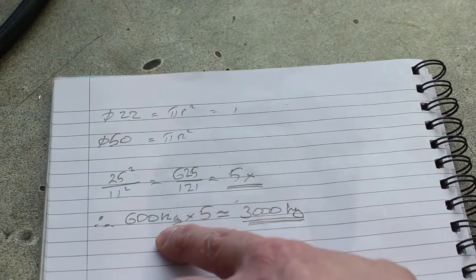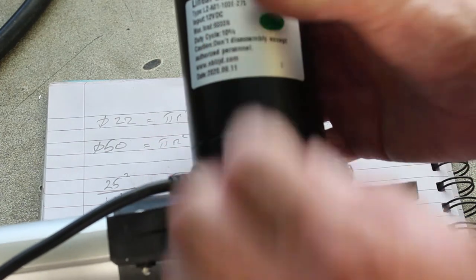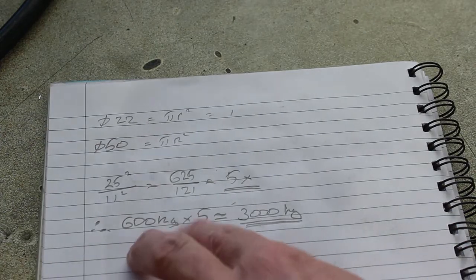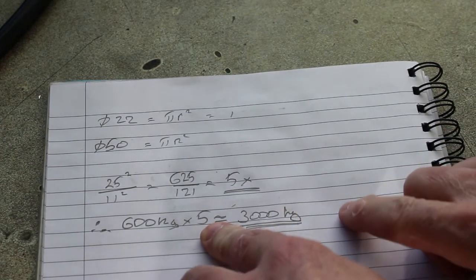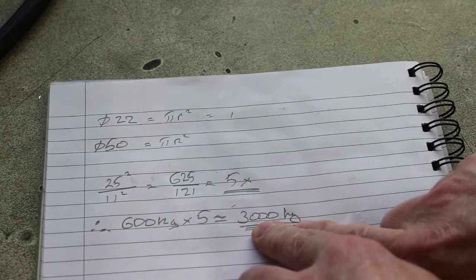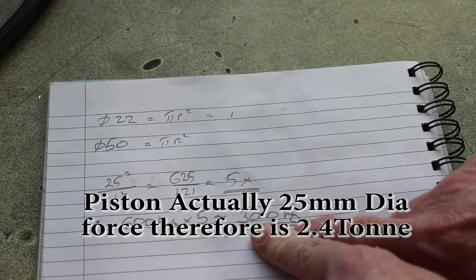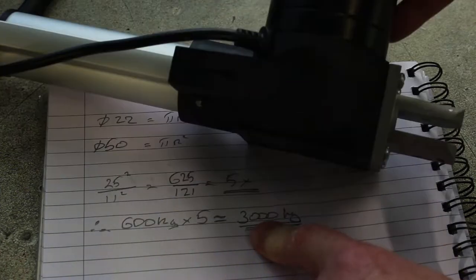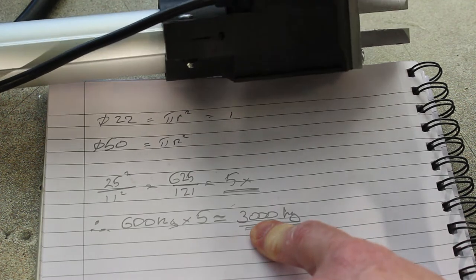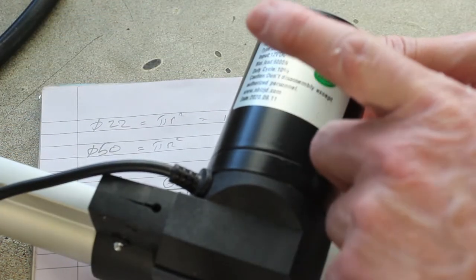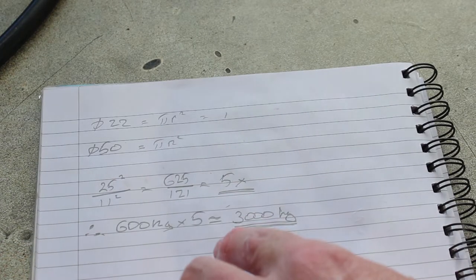So the linear actuator, this thing can shift 6,000 newtons or 600 kilos. So we're effectively multiplying the force that that generates by five. So we're up to 3000 kilos. I need 1500 kilos. So even if this is rated in Chinese newtons, who knows, we only need half the available power that this thing can generate to release the tool.